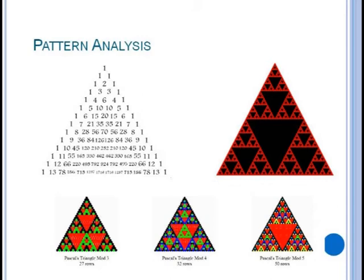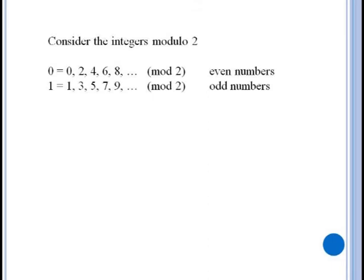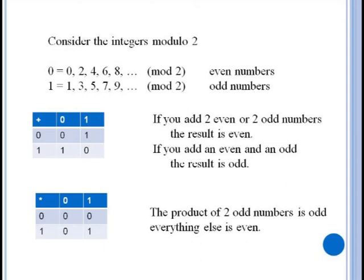As we mentioned at the start of the video, modulo systems allow us to move all of the integers down into a small workable set. For instance suppose we consider the integers modulo two. The only possible remainders are zero and one. All the even numbers are equivalent to zero and all the odd numbers are equivalent to one. Now we look at an addition and multiplication table.